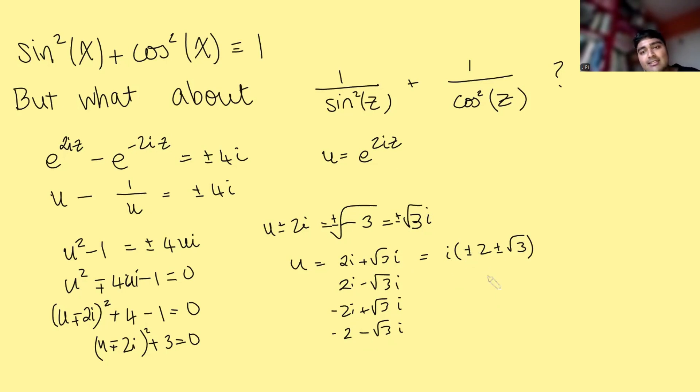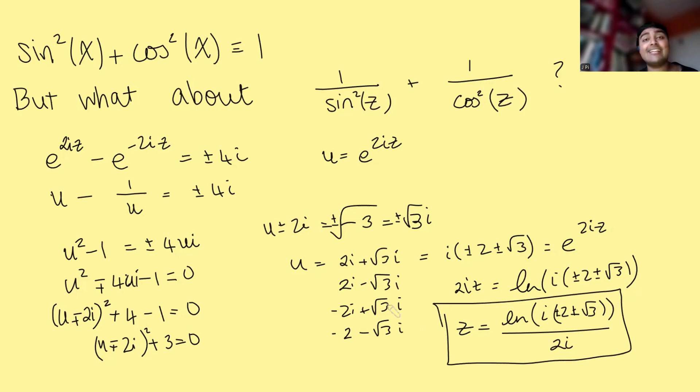And well, what is U? U is just e to the 2iz. So I can say that this thing here is e to the 2iz. So now if I just take the logarithms on both sides, I get 2iz is the logarithm of i times plus minus 2 plus minus root 3. And if I now just divide by 2i on both sides, I get z must be ln of i plus minus 2 plus minus root 3, all divided by 2i. And that there gives us four complex numbers which satisfy 1 over sin squared z plus 1 over cos squared z is 1.